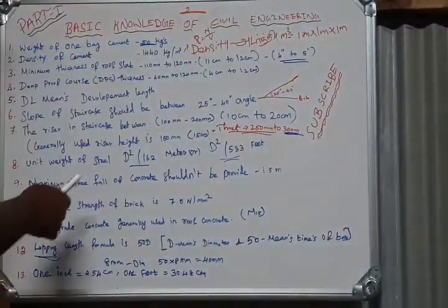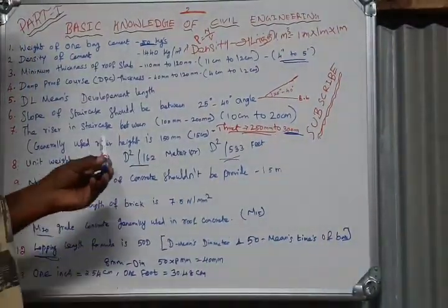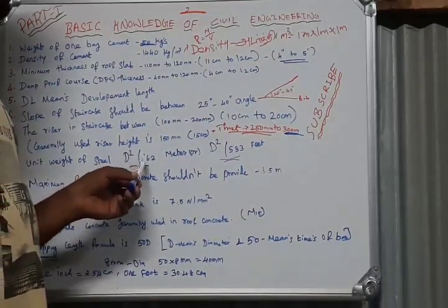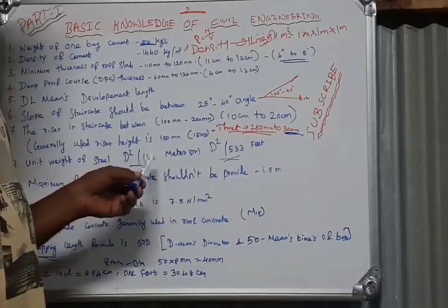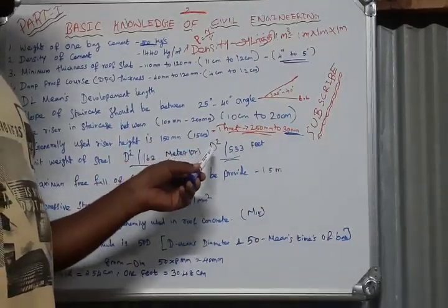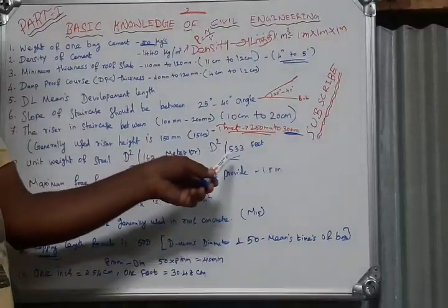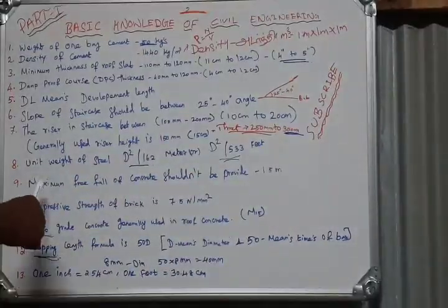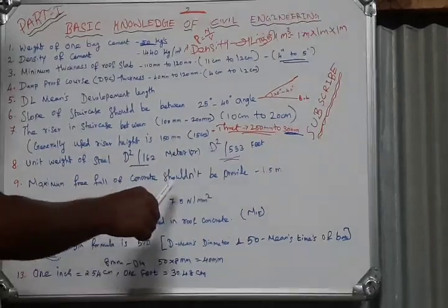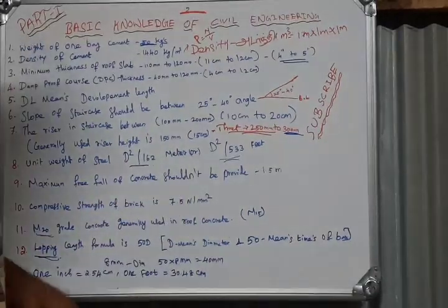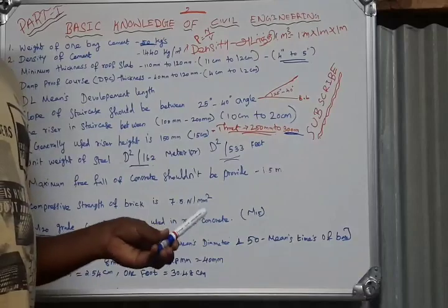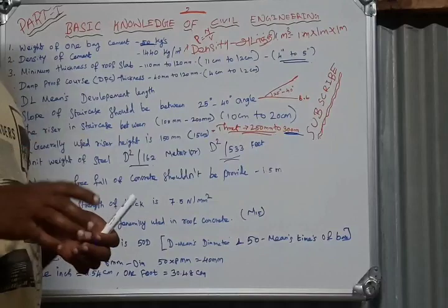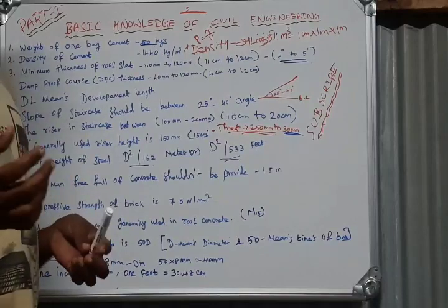Unit weight of steel for 1 meter rod: d squared by 162 for feet, d squared by 533 for this formula. Maximum pre-fall of 400 feet, 1.5 width between 1 and 5 double weight. Flat 110 feet.